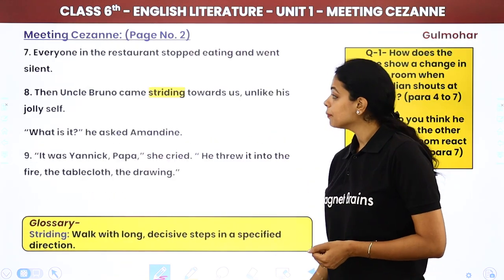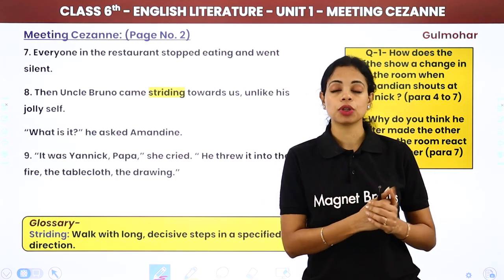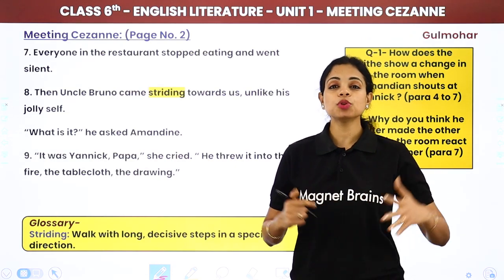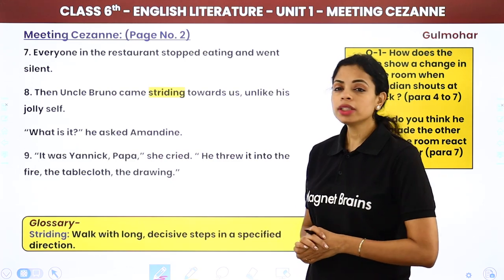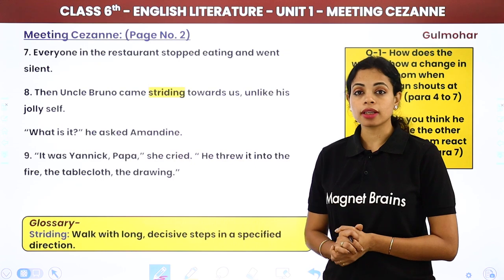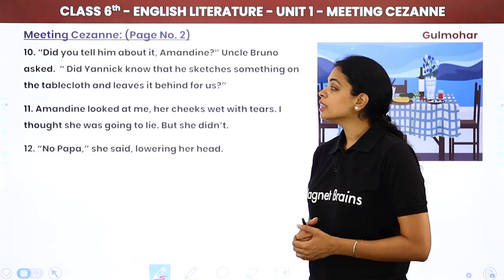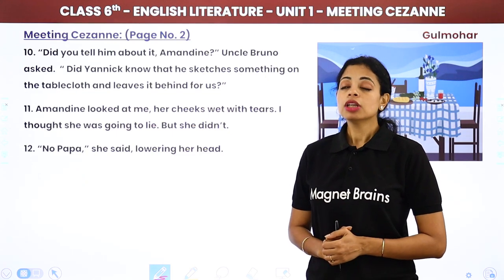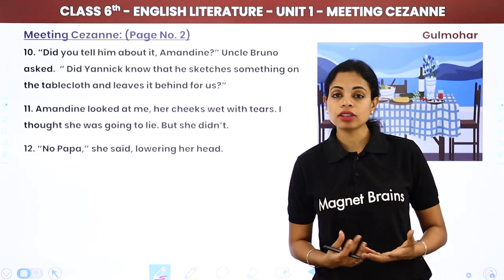Amandine was in tears, and everyone in the restaurant stopped eating and went silent. Uncle Bruno came striding towards them — unusually unlike his jolly self. He asked what happened, and Amandine cried that Yannick had thrown the tablecloth drawing into the fire. Uncle Bruno asked Amandine if she had told Yannick about the custom of the famous man sketching on the tablecloth.